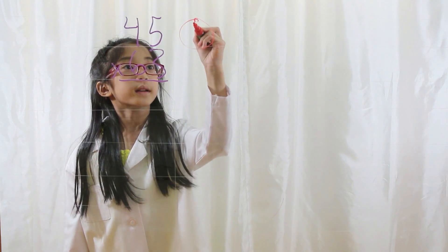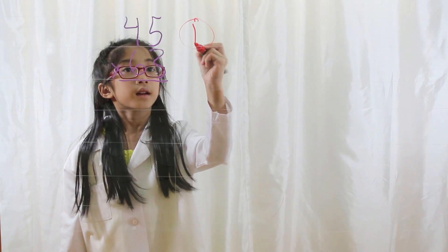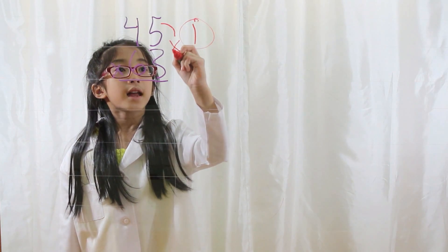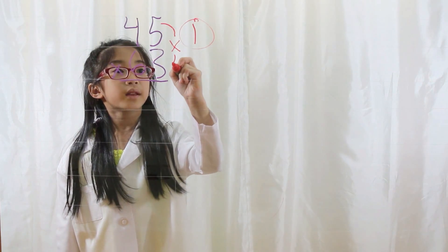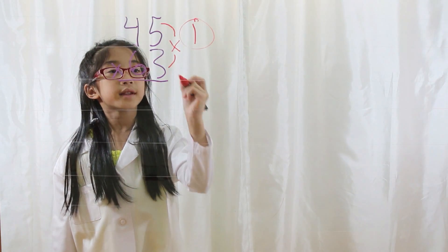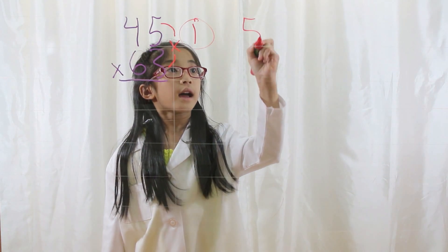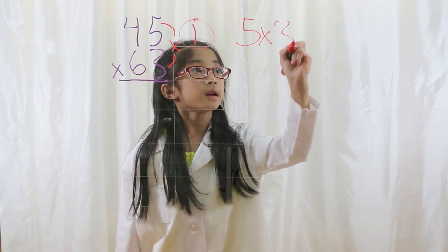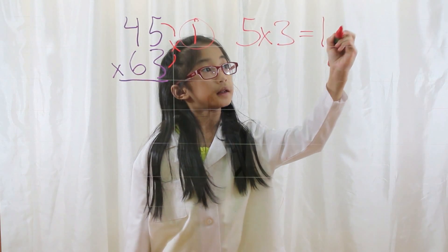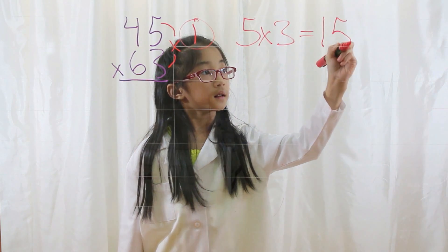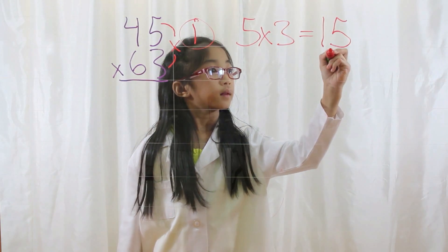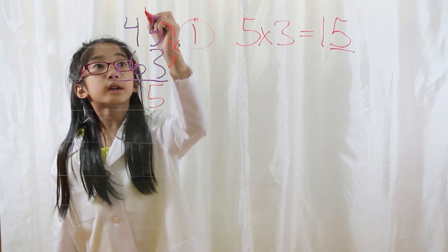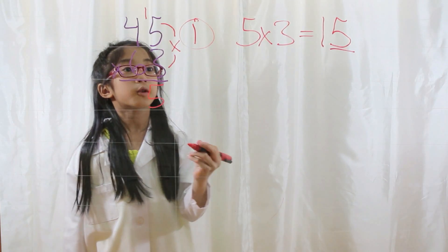Step 1. You take the one's digit of the first number and you multiply it by the one's digit of the second number. 5 times 3 equals 15. You write a 5 down and you carry your 1 over the 45.